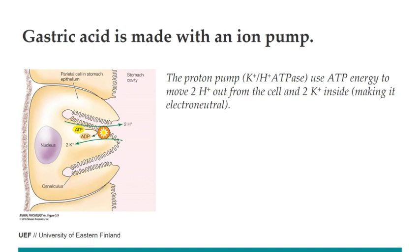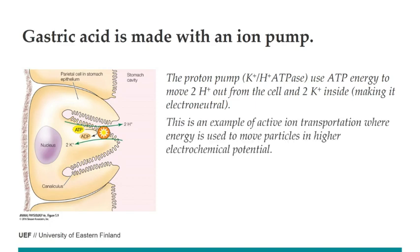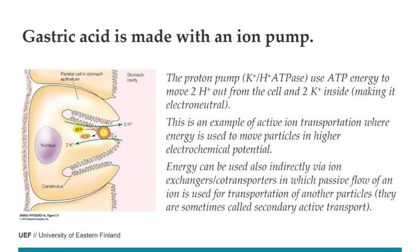Every time the pump turns it uses one ATP, making it quite an energy-demanding process. This is a good example of active ion transport where energy is used to move particles to a higher electrochemical potential. Beside this we also have secondary active transport, where we link the movement of other particles to the electrochemical potential of sodium, potassium, or chloride using exchangers or co-transporters. These are called secondary active transport because they work only because we have these ion pumps.